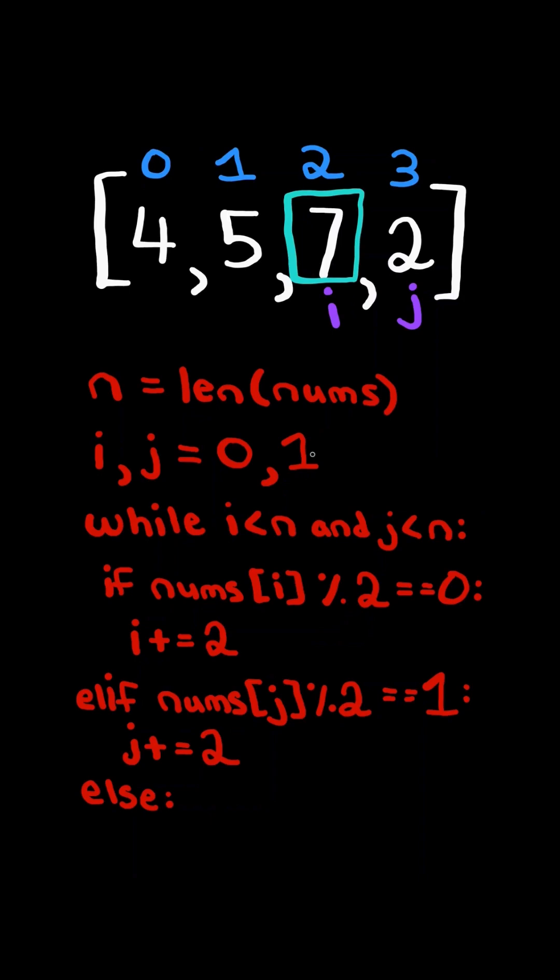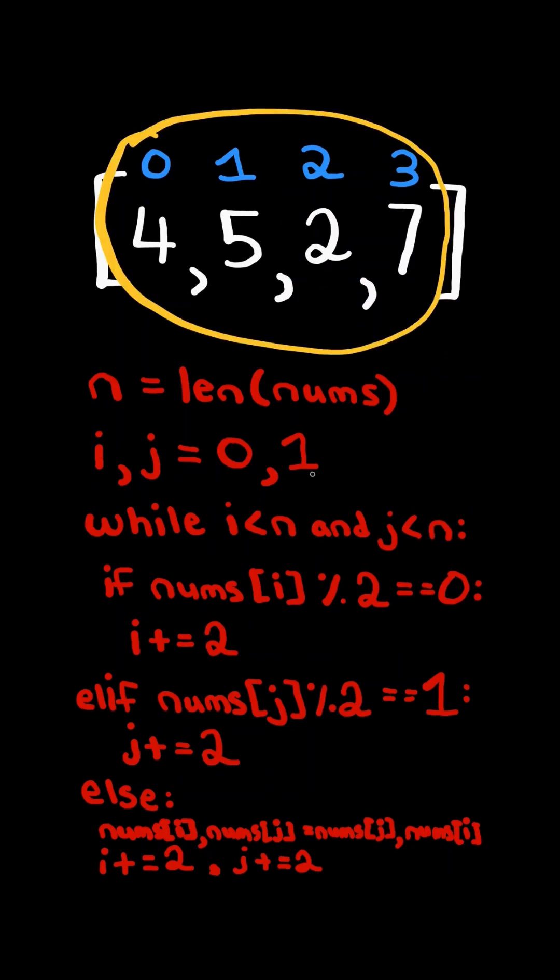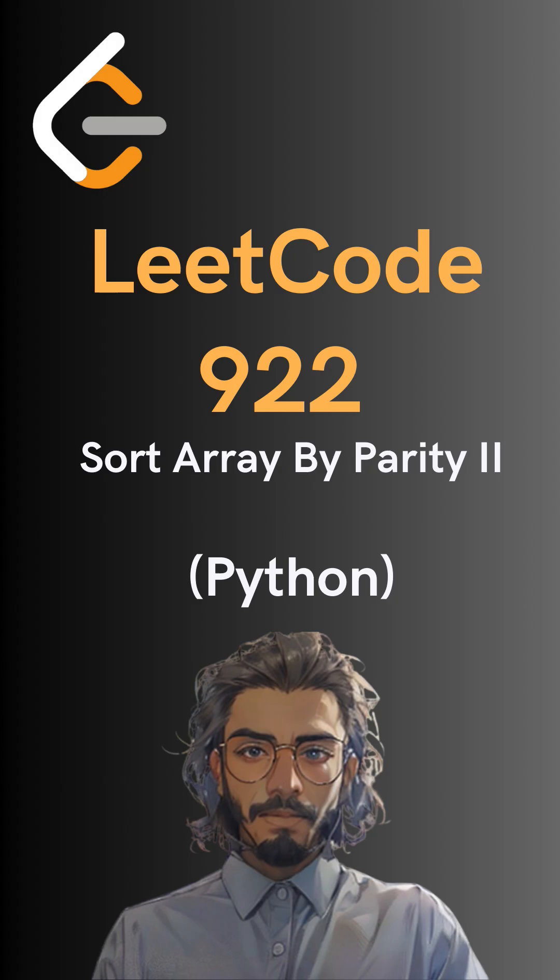Now if the value at the even pointer is odd, then we swap the value at the even and odd index, and now the conditions are satisfied. We then increment the even pointer by 2 and the odd pointer by 2. At the end we return the list, and here's the code to do so. Please like and follow for more.